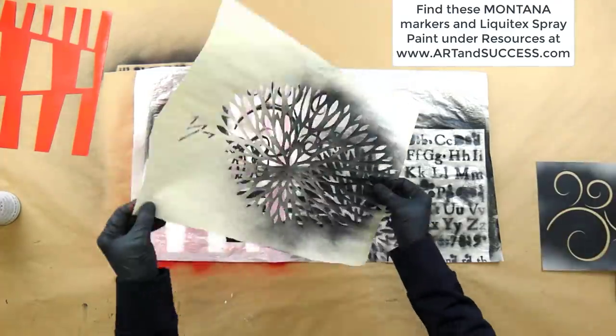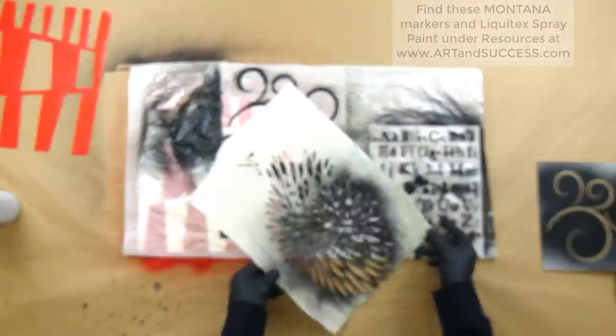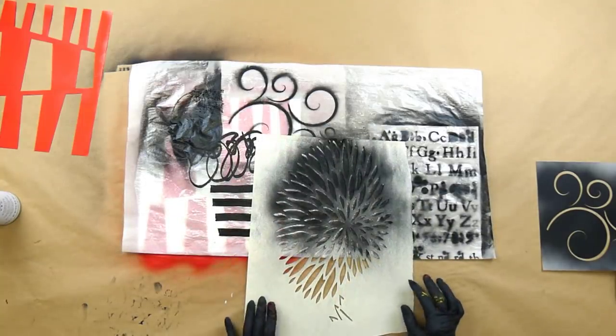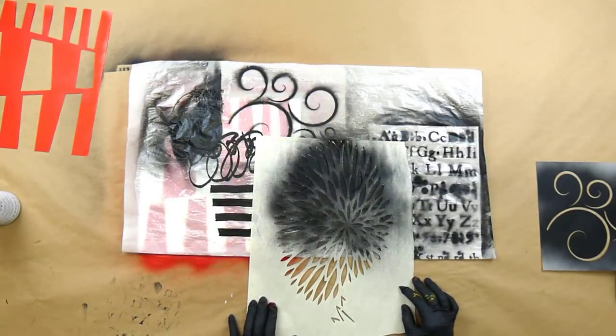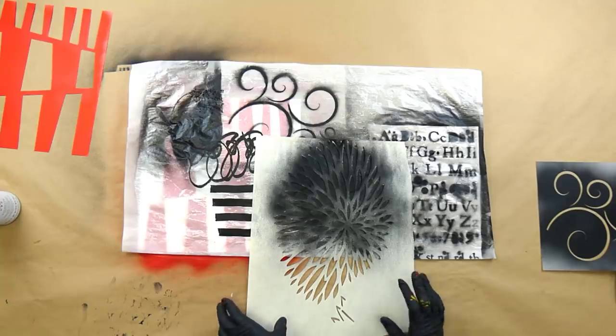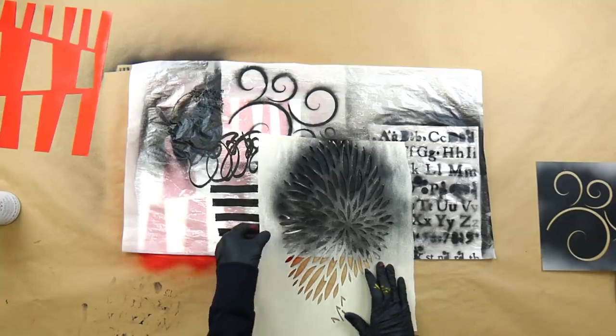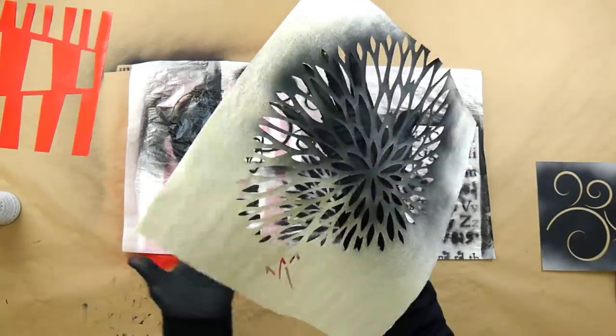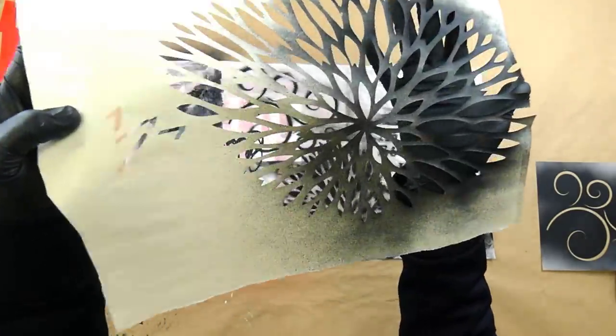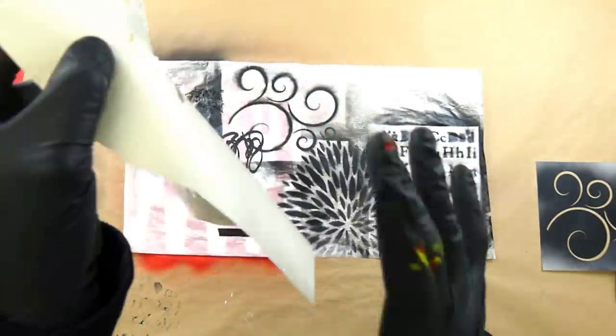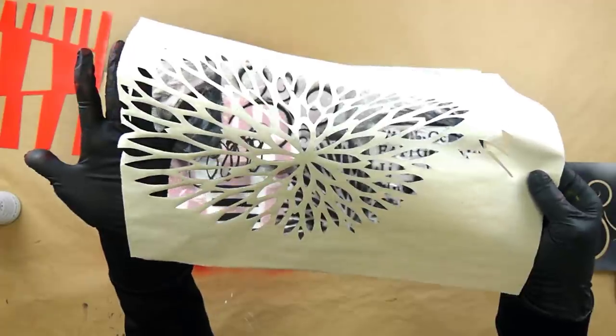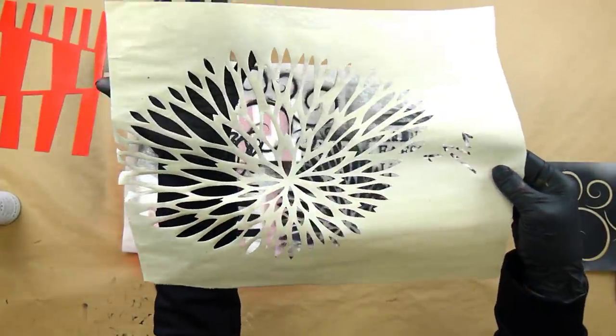This is a hand-cut stencil from a Japanese kimono pattern. This is just newsprint, and the spray paint is just so lightweight that it really didn't even affect the stencil too much. I could definitely use that again, which is really great, because it was a very complicated stencil to cut out by hand, and this is just newsprint.